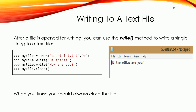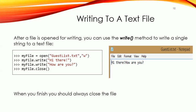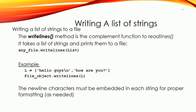Now we are done talking about reading from files. Let's start talking about writing to a file. To write to a text file, first open the text file in writing mode using access mode 'w'. Then use the write() method to write a single string to a text file in a single line. Don't forget to close your file at the end. The write() method writes a sequence of strings to the file; the sequence can be any iterable object producing strings, typically a list of strings.